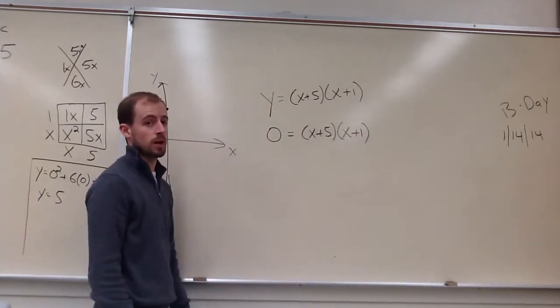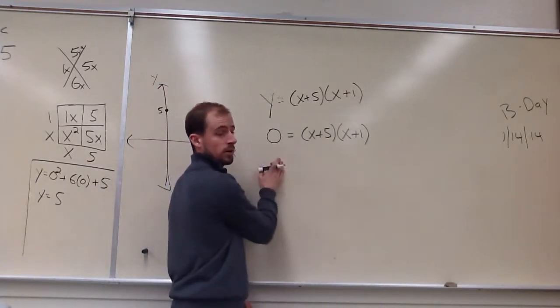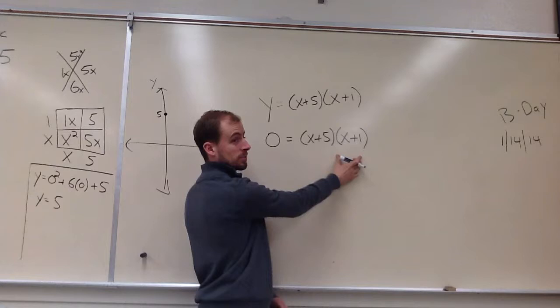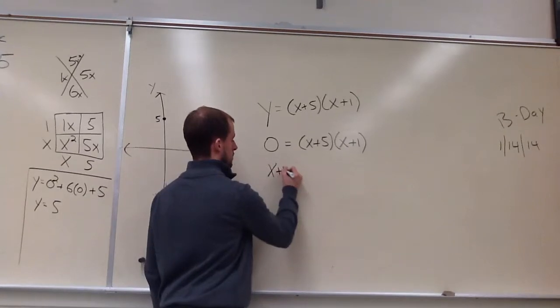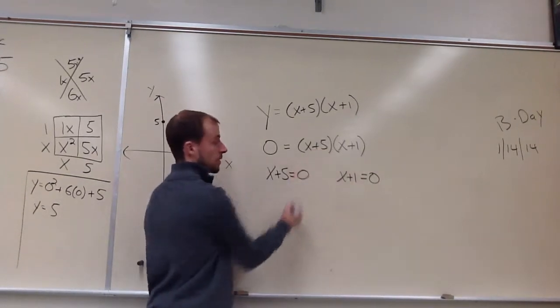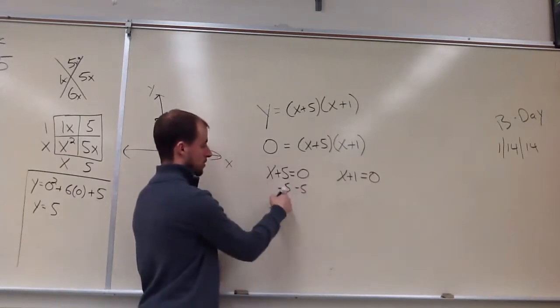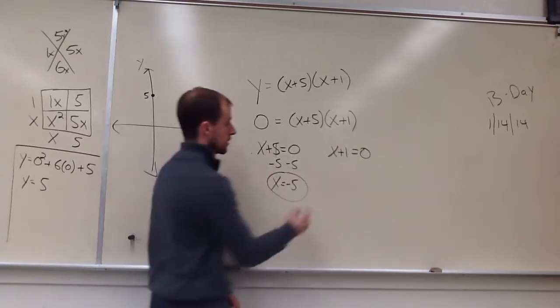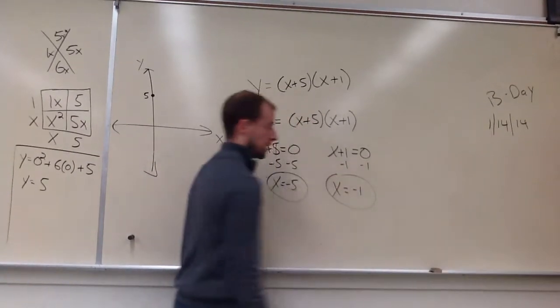And this is where we use the zero-product property. Anything times 0 equals 0. So, if this equals 0, then the whole thing is 0. If this equals 0, the whole thing is 0. This being the factor x plus 5, and this being the factor x plus 1. So, what I do is I set each factor equal to 0. I took this, set it equal to 0, took this, set it equal to 0, and then I solve for x. Subtract 5 from both sides. There's one solution, and then do the same thing here. There's my other solution.